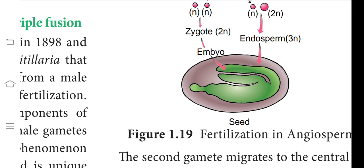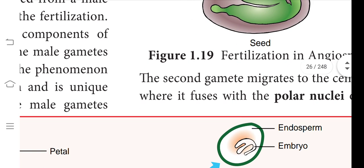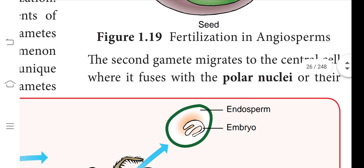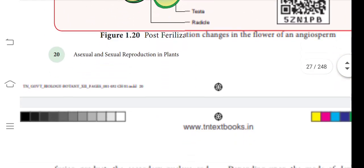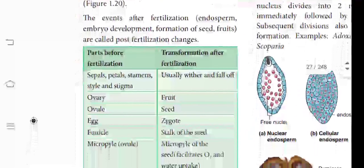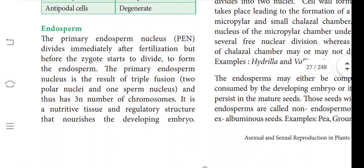The endosperm is 3n and the zygote is 2n. The endosperm feeds the growing embryo. The second gamete migrates to the central cell, which fuses with the polar nuclei present in the ovule. The fusion product forms the primary endosperm nucleus (PEN). Since this involves fusion of three nuclei — whereas normal fertilization involves only two — it is called triple fusion. This is one of the important questions.